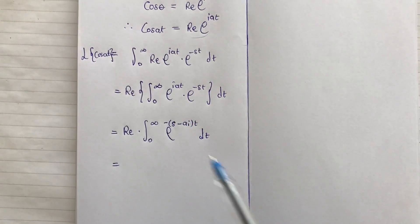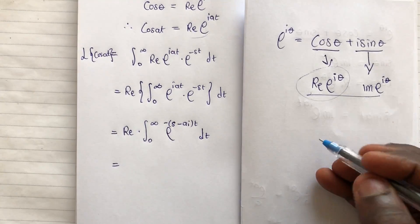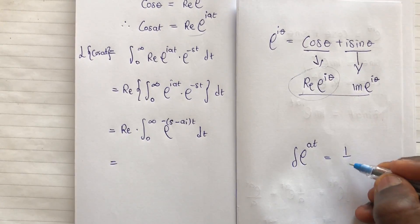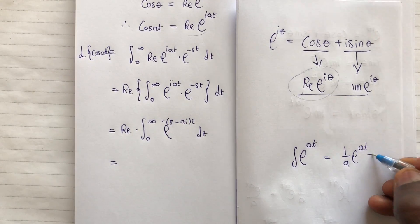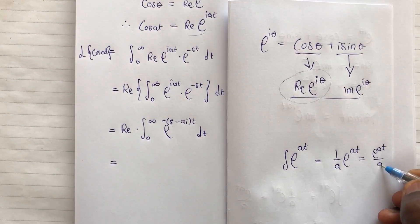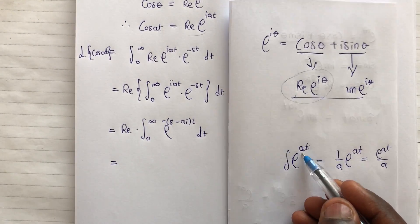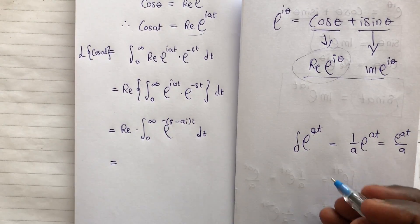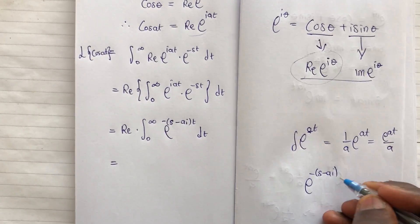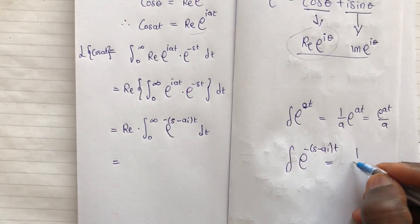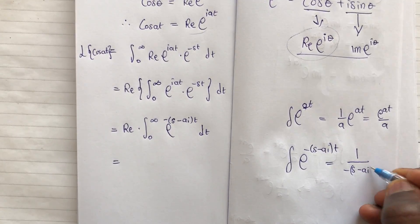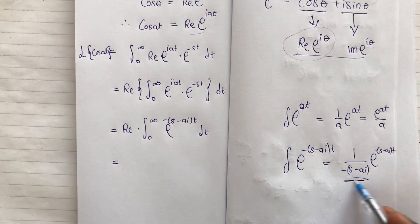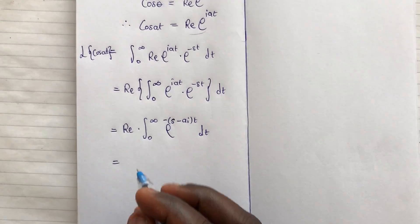Now we integrate this. We know that the integral of e^(at) is (1/a)·e^(at), or equivalently e^(at) over a. Here the coefficient of t is (minus s + a·i), so applying the same rule, the integral of e^((minus s minus a·i)·t) gives 1 over (minus s minus a·i) times e to the power (minus s minus a·i)·t.